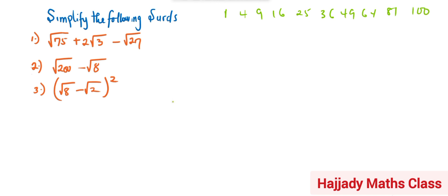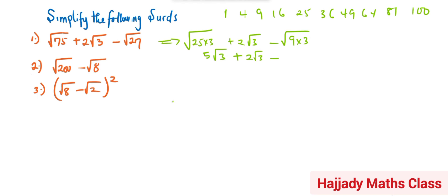Simplifying the first question, we need to break this down. We have to look for a perfect square that can multiply another number to give us 75. So 75 can be simplified as 25 multiplied by 3, plus 2 root 3, minus 9 times 3. Finding the square root of 25 gives 5, which is the same as saying 5 root 3 — that is rule number 1. I'm going to attach the link to the previous video on rules of surds in the description below. So here we have 2 root 3 already simplified.